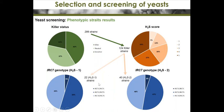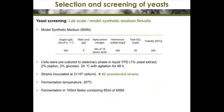A key attribute for yeast used in Sauvignon is the ability to convert thiol precursors to volatile thiols. We found that only 5% of strains carry a functional IRC7 gene — the others have a deleted form of both alleles. It is therefore very rare to have a functional IRC7 gene.